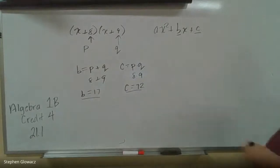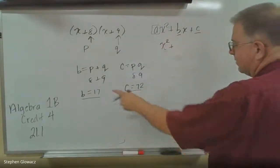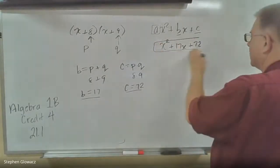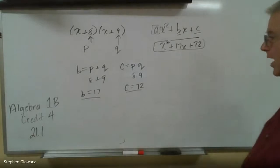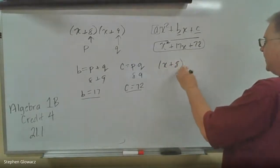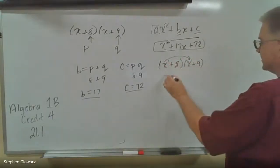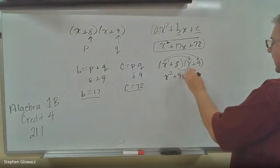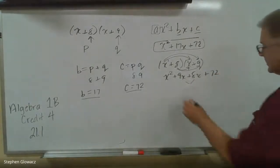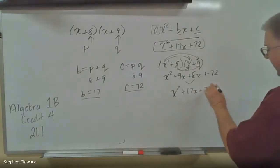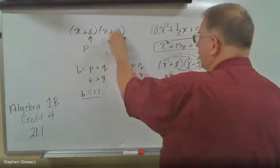We could write this trinomial. Since a is 1 for all problems in this lesson, we have x squared, b is 17, and c is 72. Now let's verify by multiplying (x+8)(x+9). We get x times x equals x squared, x times 9 is 9x, 8 times x is 8x, and 8 times 9 is 72. The middle terms are like terms: 9 plus 8 is 17, so we have 17x. We find b by adding these numbers and c by multiplying them.